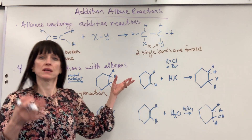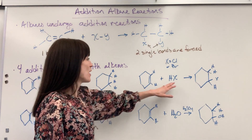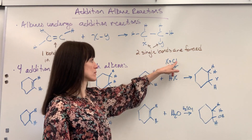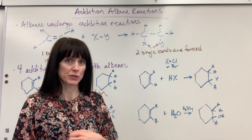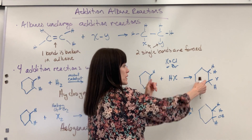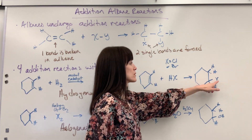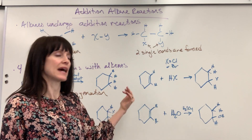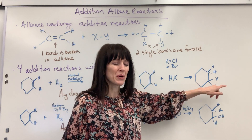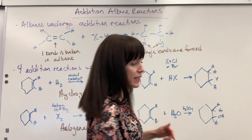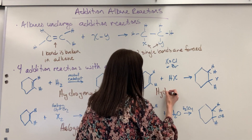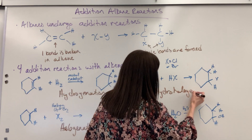Over here we have our alkene, the cyclohexene, and we're going to add one of our binary acids. The X again represents either chlorine or bromine, so you're looking at hydrochloric acid or hydrobromic acid. This is going to yield a single bond — that double bond is broken, and then the hydrogen and the chlorine from that binary acid, like hydrochloric acid, is going to add. So there's your hydrogen and there's your halogen, either that chlorine or the bromine. And this is called hydrohalogenation.